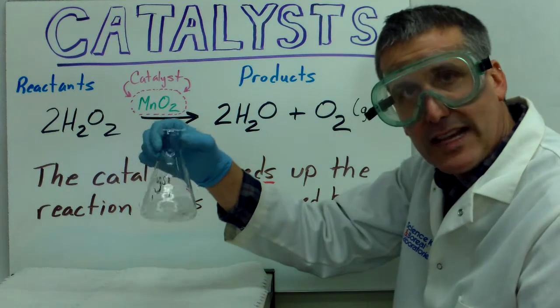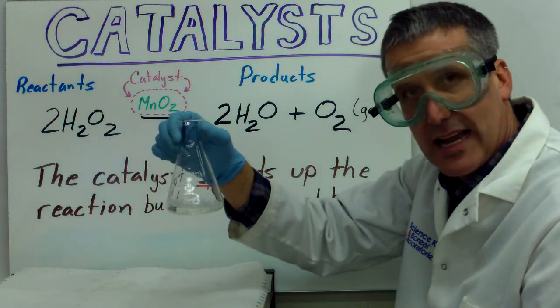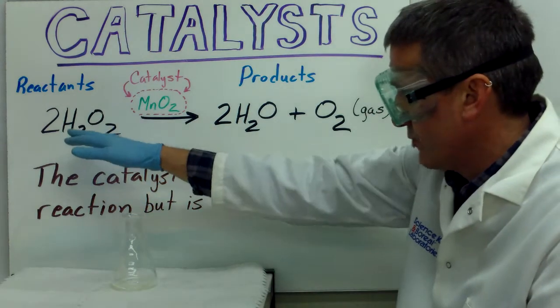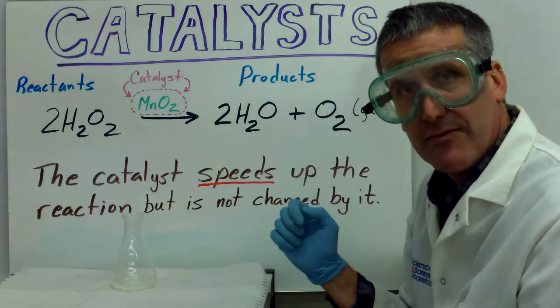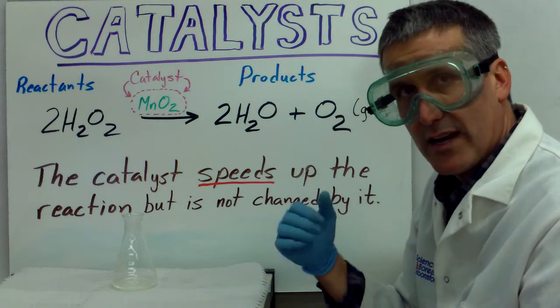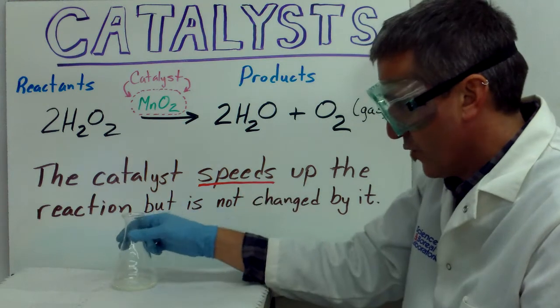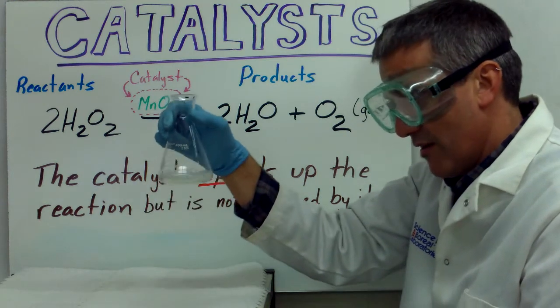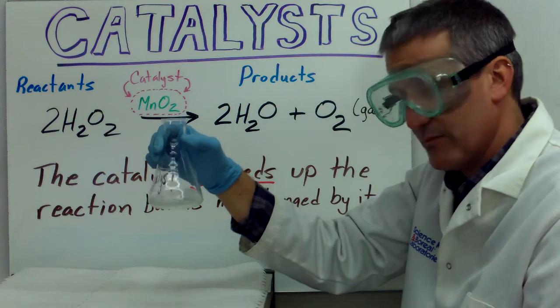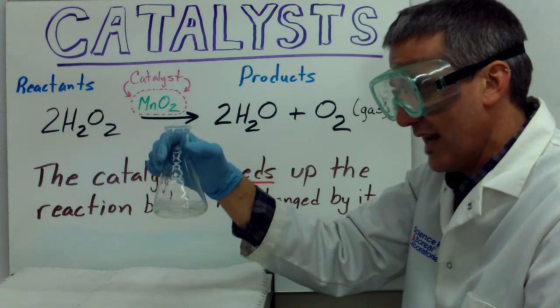In this Erlenmeyer flask, I have hydrogen peroxide and soap. I put the soap in there, so when this reaction occurs, we'll be able to see if more oxygen gas is being produced. That will show us if the rate of the reaction has increased. Right now, there are a few bubbles on the top of this Erlenmeyer flask, the hydrogen peroxide in here, but not a lot.